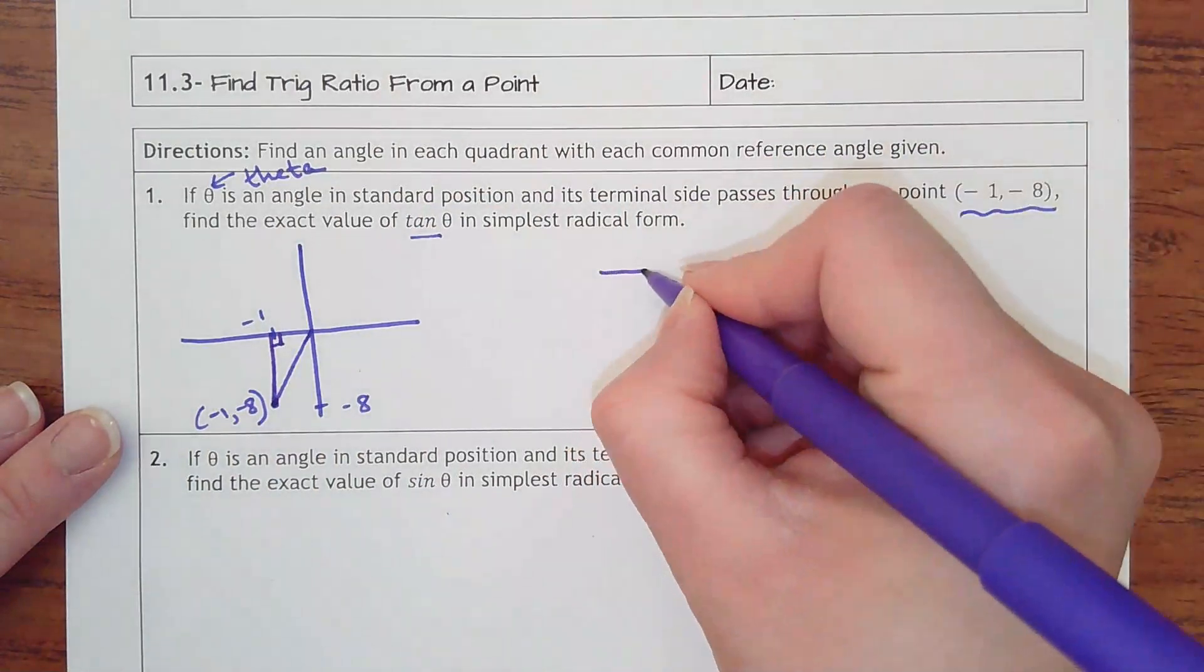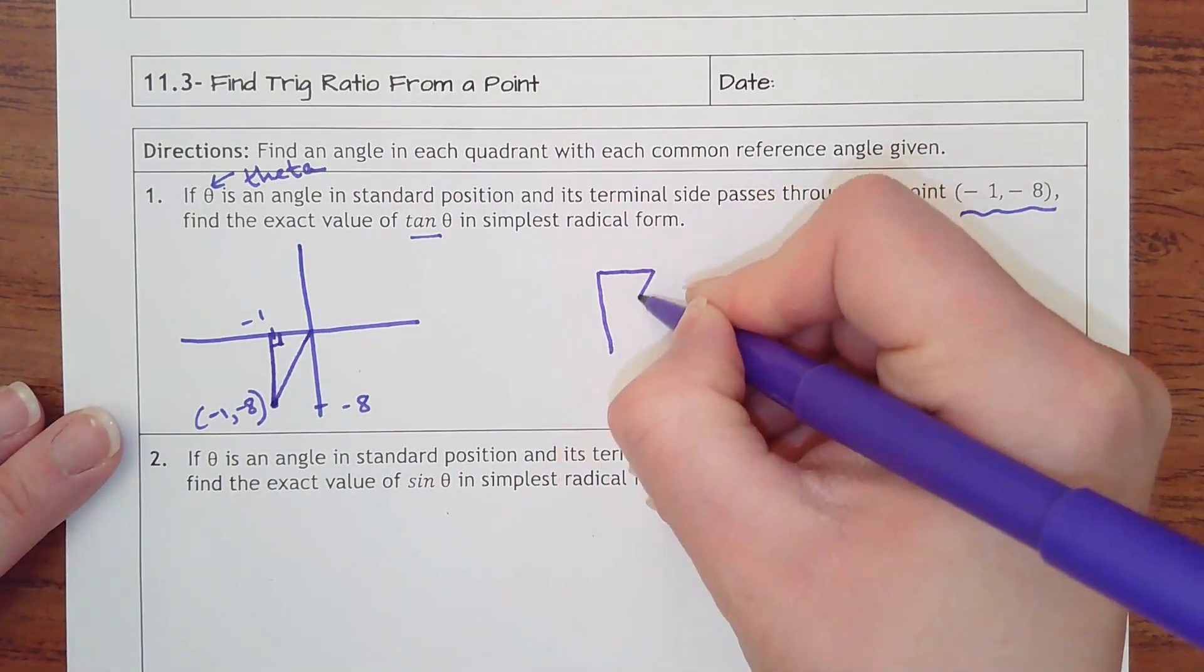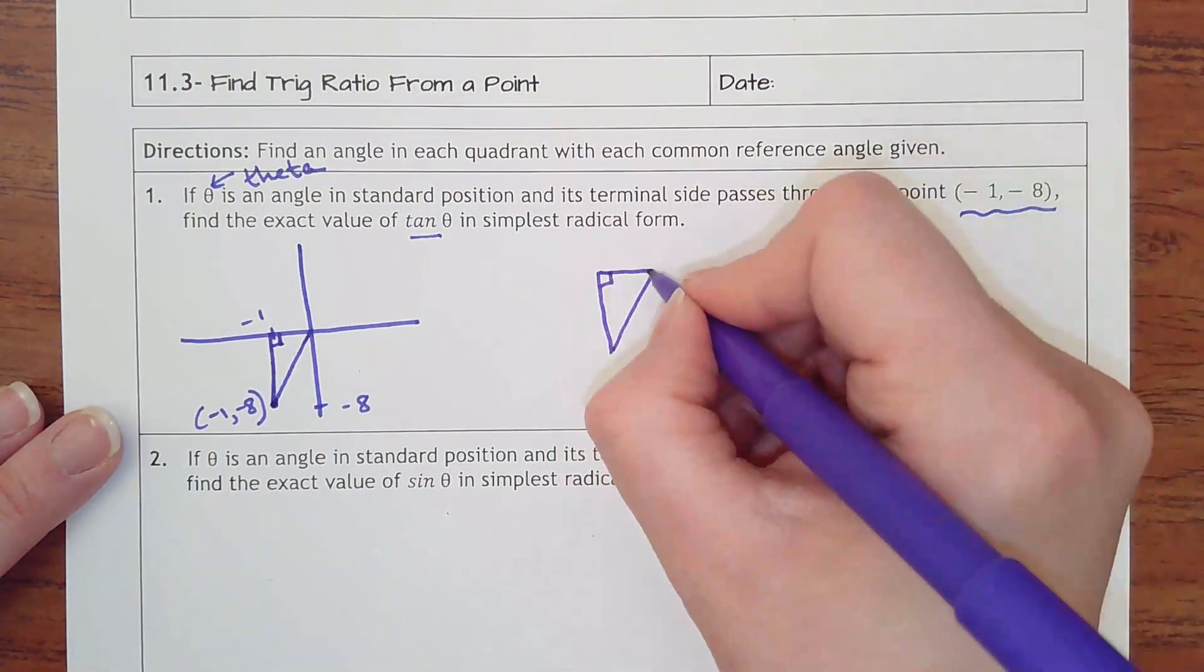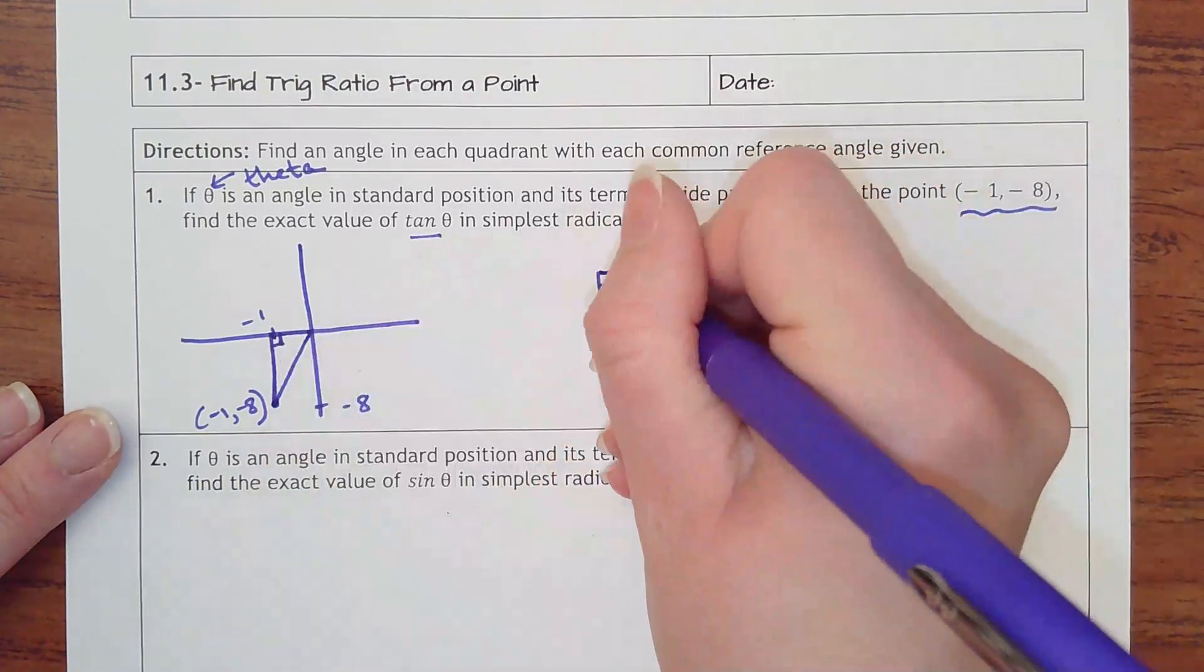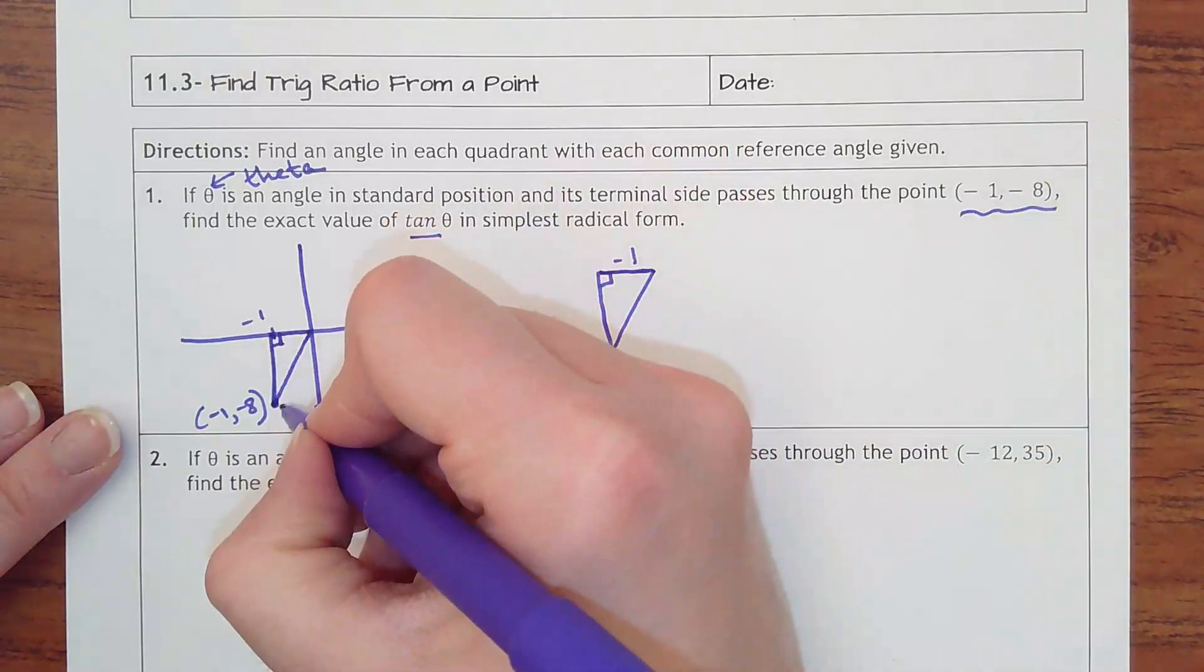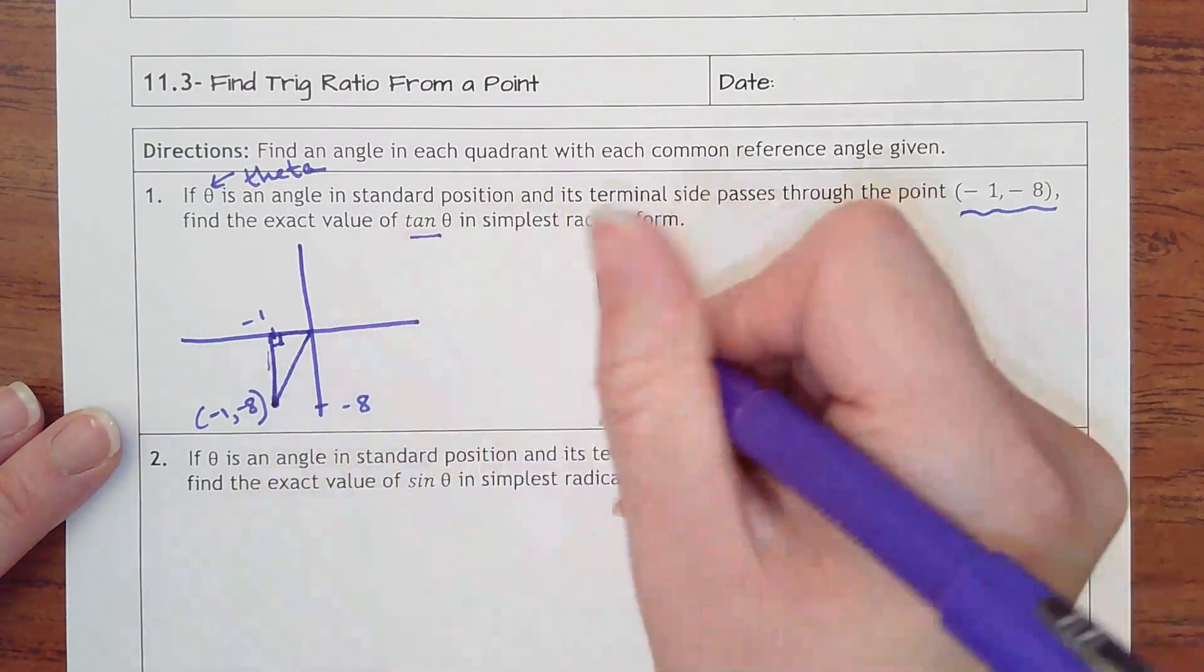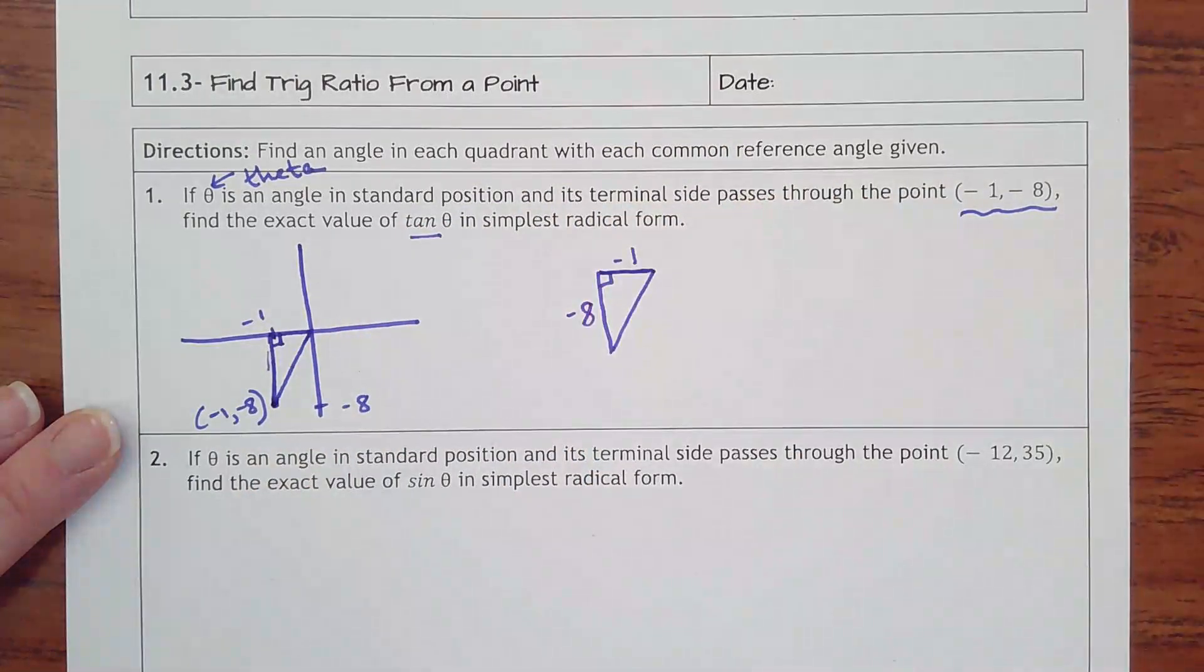So now my triangle looks like this. What is this length right here? See how I went back 1, so this is -1. This is down 8, so this is -8. Yes, include the negatives because we'll find out that these can change signs.